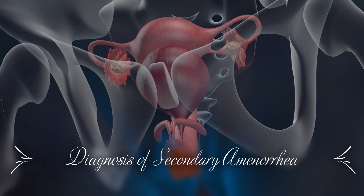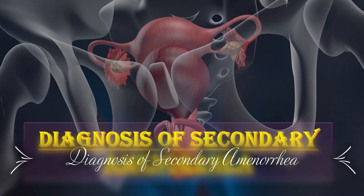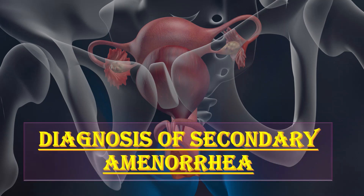Bismillahirrahmanirrahim. Today we will talk about the diagnosis of secondary amenorrhea, which is defined as the absence of three or more menstrual cycles in a row by someone who has had periods in the past. We have already discussed the causes of secondary amenorrhea in our previous video, and you can find the link of that video in the i-button in the top right corner of this video.